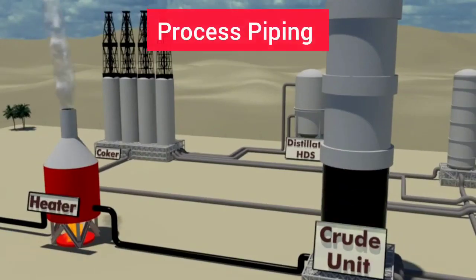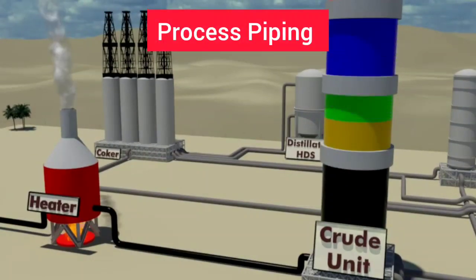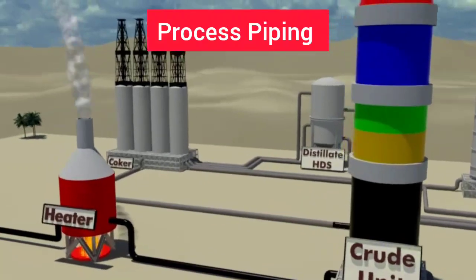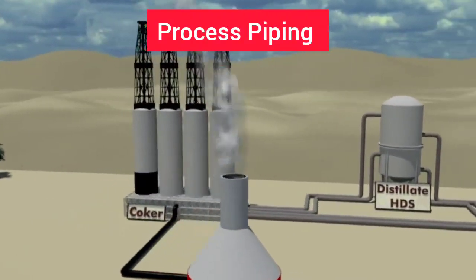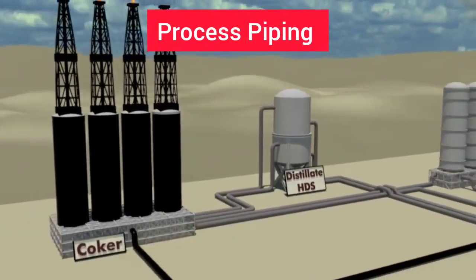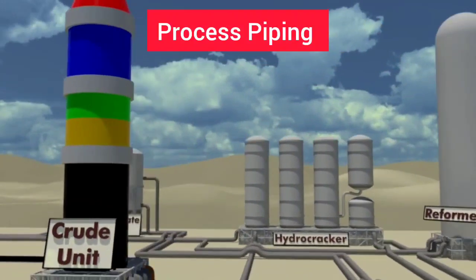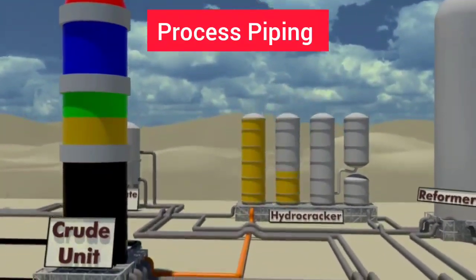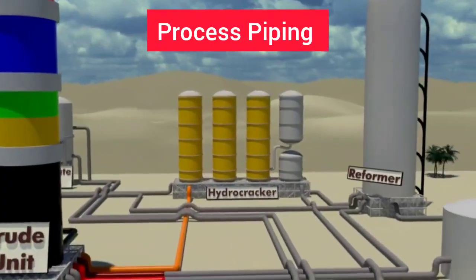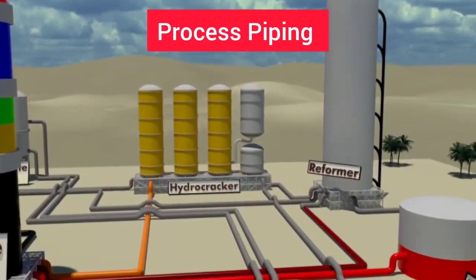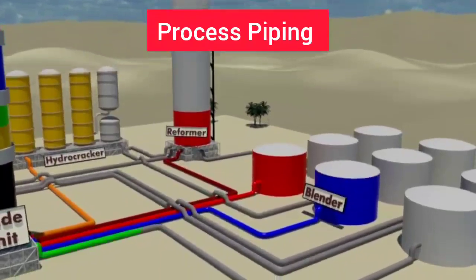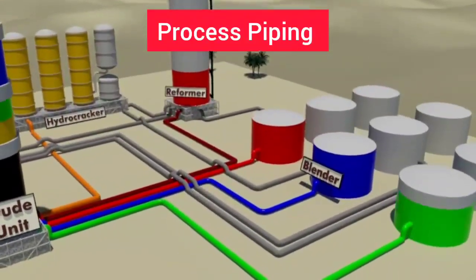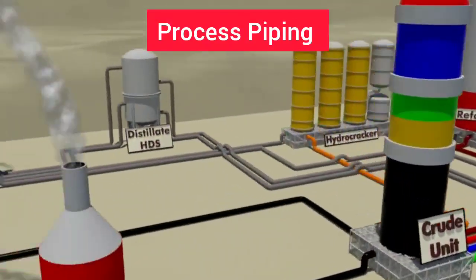Process piping refers to the pipes which carry raw materials or finished products to the desired location — either into reaction vessels or other vessels, or out of the plant to storage tanks or other equipment for further treatment.